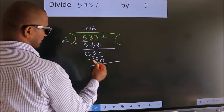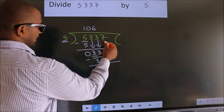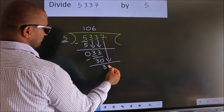Now we subtract. We get 3. After this, bring down the beside number. So, 7 down.